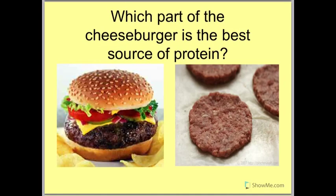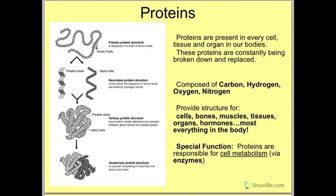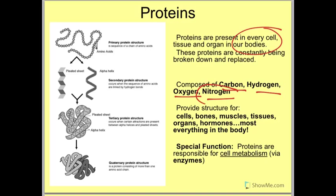Which part of the cheeseburger is the best source of protein? Now we're going to talk about proteins. Proteins are present in every cell, tissue, and organ in our bodies, and these proteins are constantly being broken down and replaced. Protein isn't just for your muscles — it's for every cell in our bodies. Proteins have carbon, hydrogen, oxygen, and nitrogen in them — the same stuff as sugars, but we're adding nitrogen.